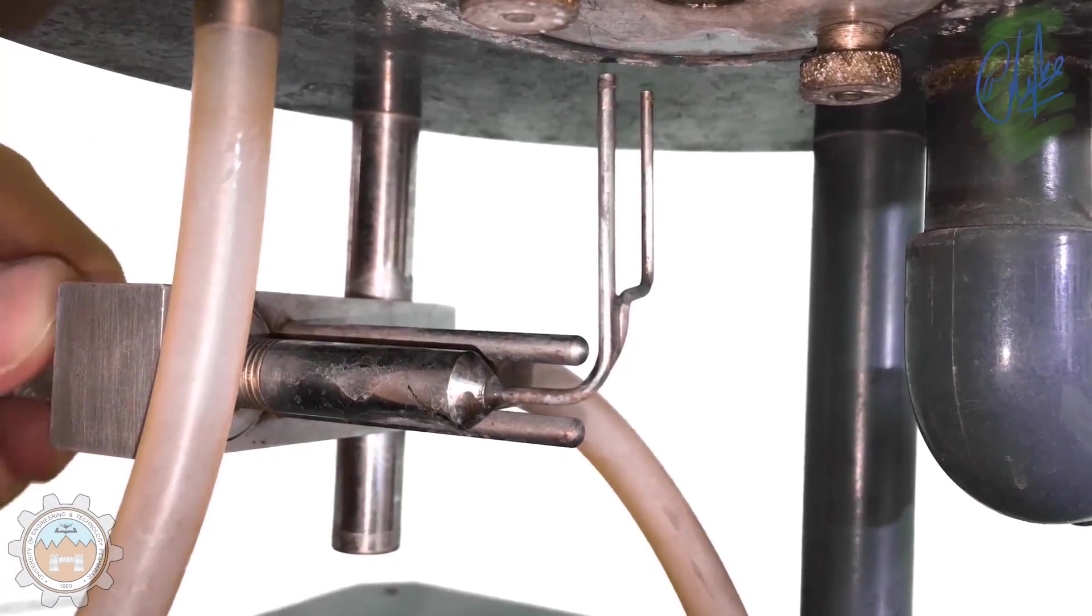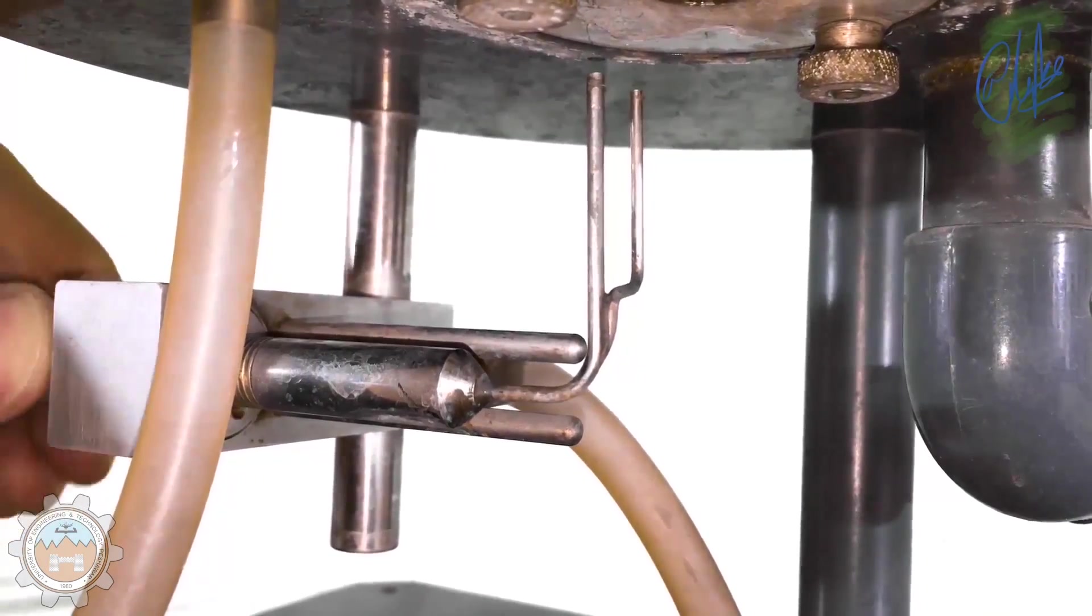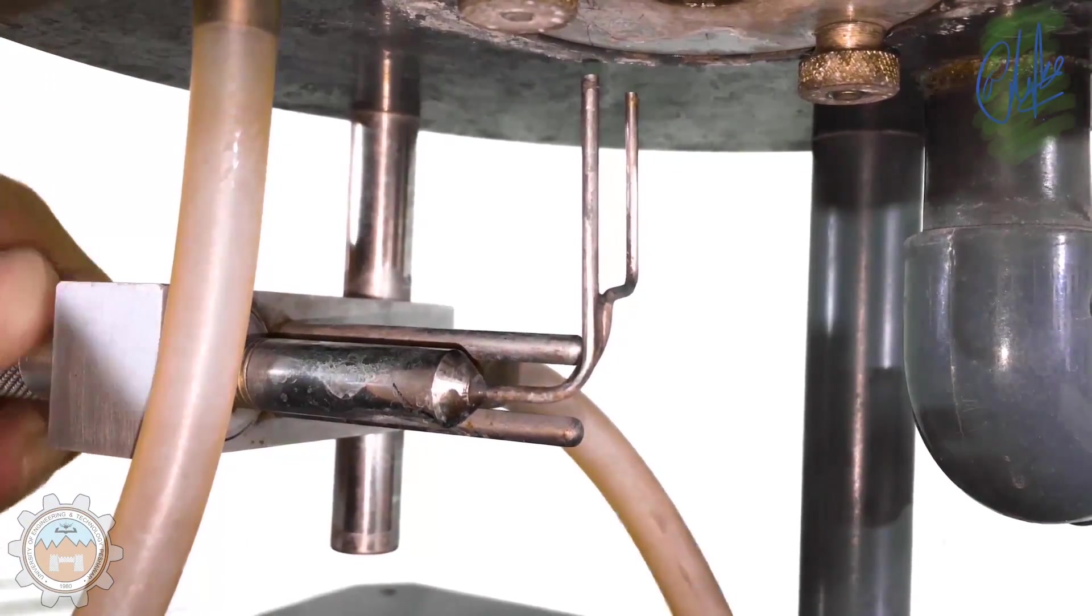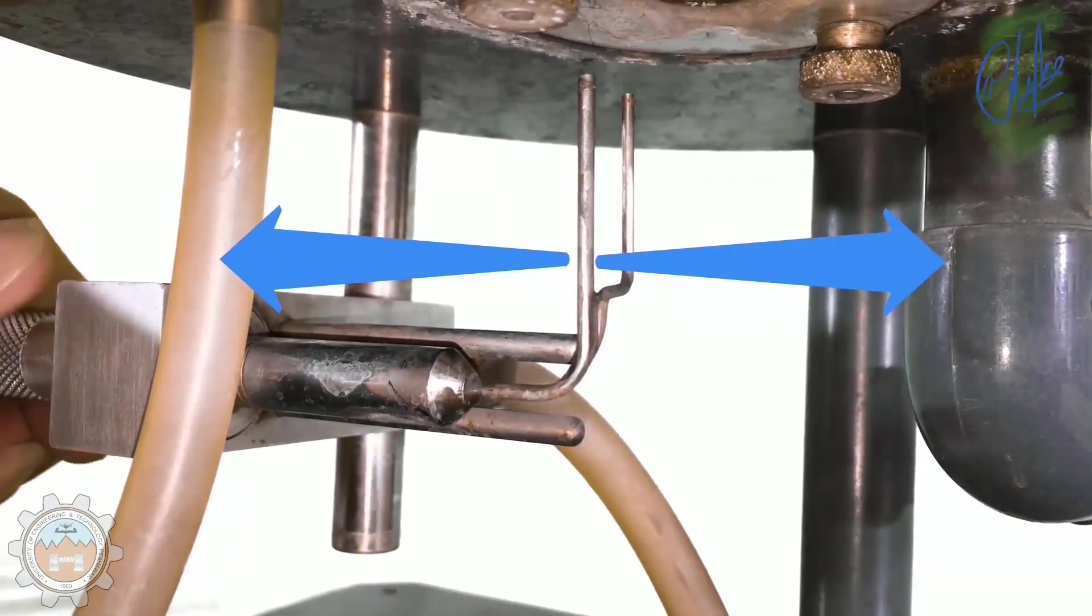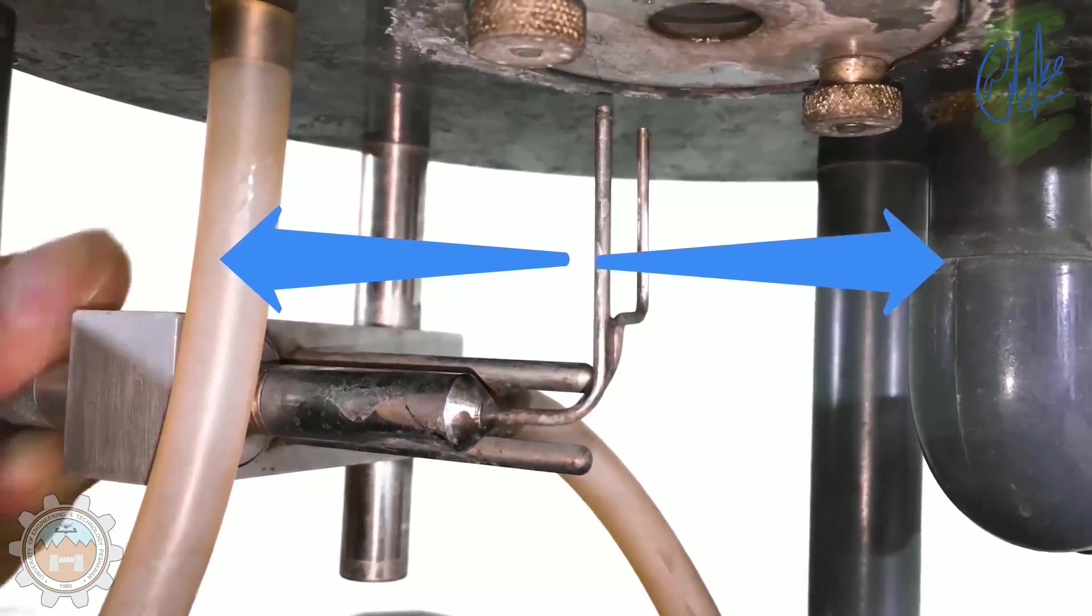This is how the micrometer screw gauge actually works. By revolving the lever it only moves in the forward and the backward direction like in a to and fro motion.